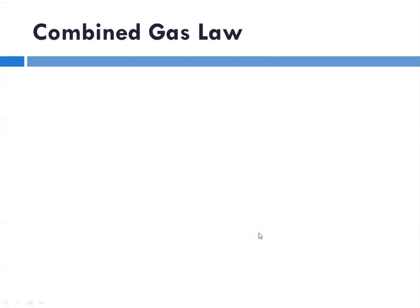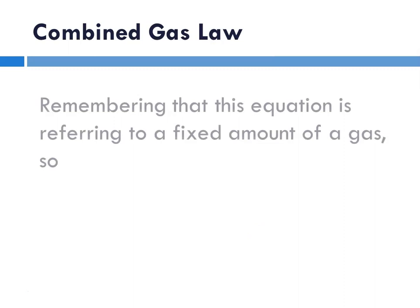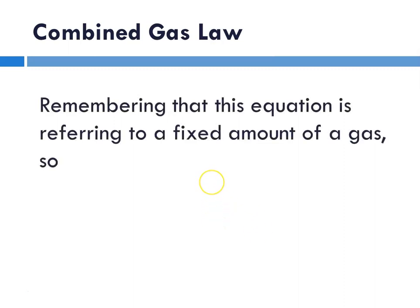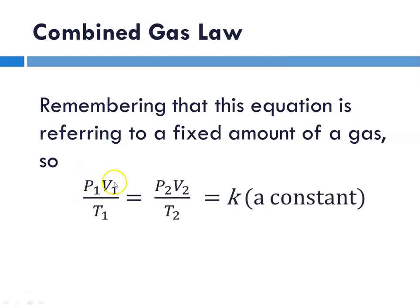For starters, let's recall that the combined gas law was talking about a fixed amount of a gas. The combined gas law combined Boyle's, Charles', and Gay-Lussac's law, and it looked like this: P1V1/T1 equals P2V2/T2, and that's equal to k, some constant.